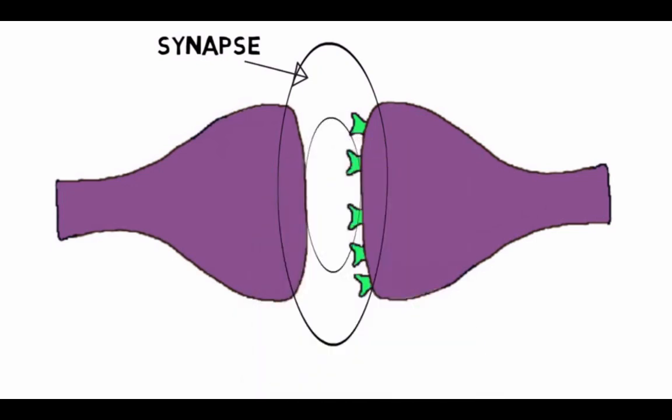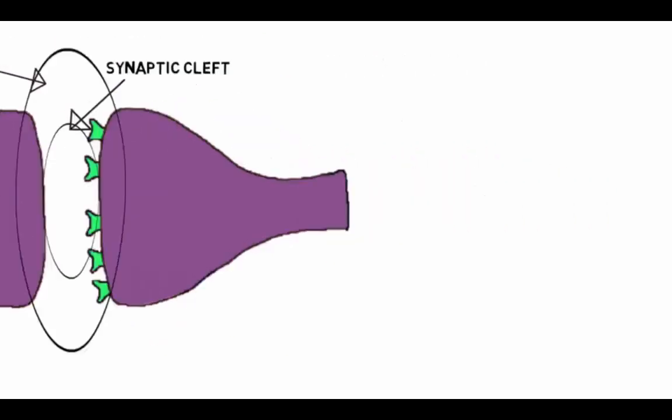The neurons are not actually connected, but are separated by a microscopically small space called the synaptic cleft. The cleft is less than 40 nanometers wide. By comparison, a human hair is about 75,000 nanometers wide.